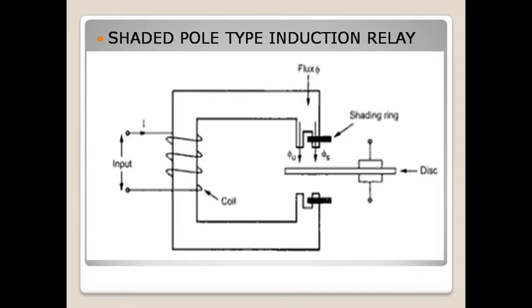Hello friends. When a fault occurs anywhere in the power system and you have installed a shaded pole induction relay, that particular area is called the protected area. The moment the fault occurs, the current increases in that protected area.